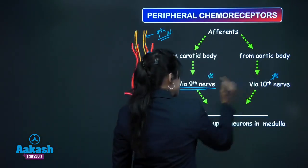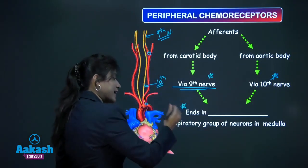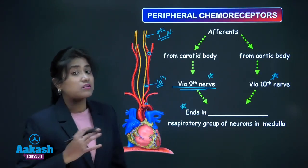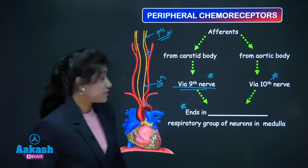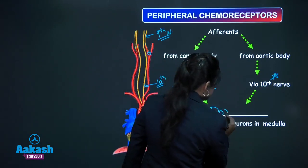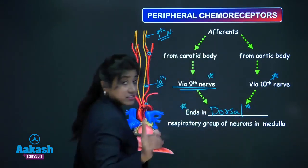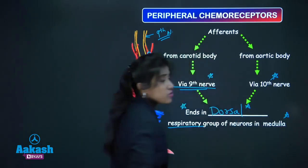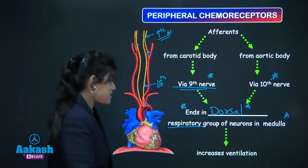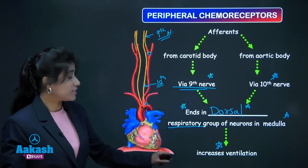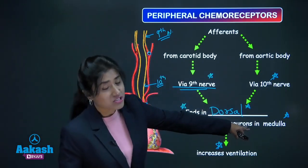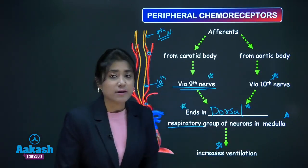Both the ninth and tenth nerves end in the dorsal respiratory group of neurons in the medulla — not the ventral respiratory group. These afferents from peripheral chemoreceptors end in the DRG, that is the dorsal respiratory group of neurons of medulla, ultimately increasing ventilation.